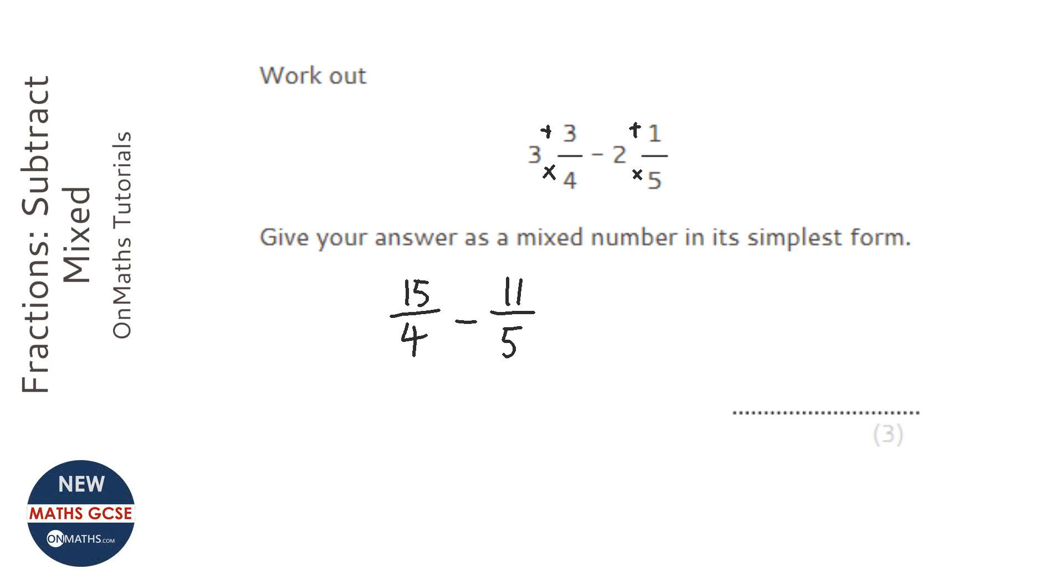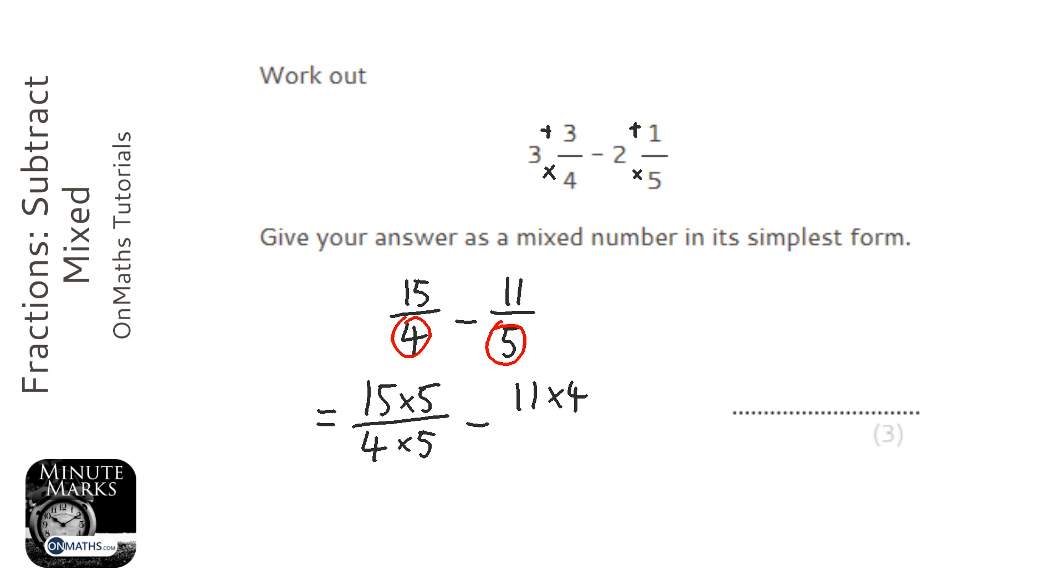Then what we need to do is make sure the bottoms are the same, and the lowest common denominator between 4 and 5 is 20. So we're going to times the first two numbers by 5, so the 15 and the 4, we're going to times by 5. And we're going to times the 11 and the 5 by 4, the top and bottom of this fraction by 4.